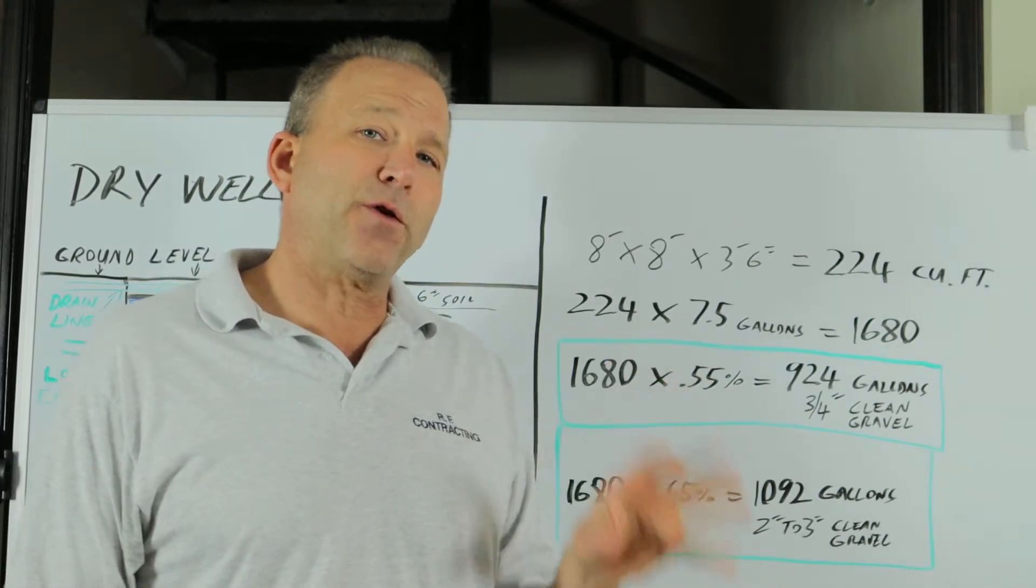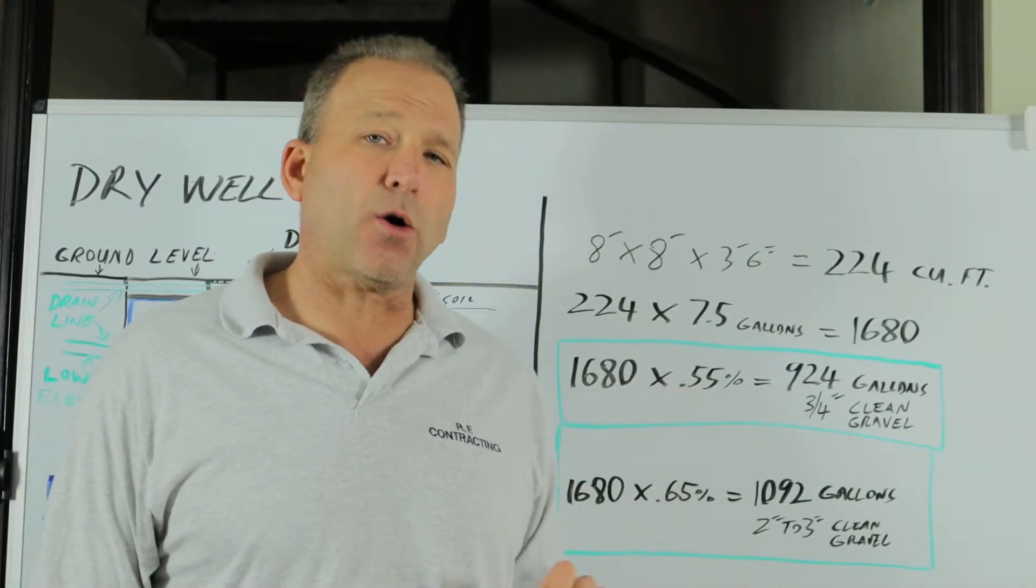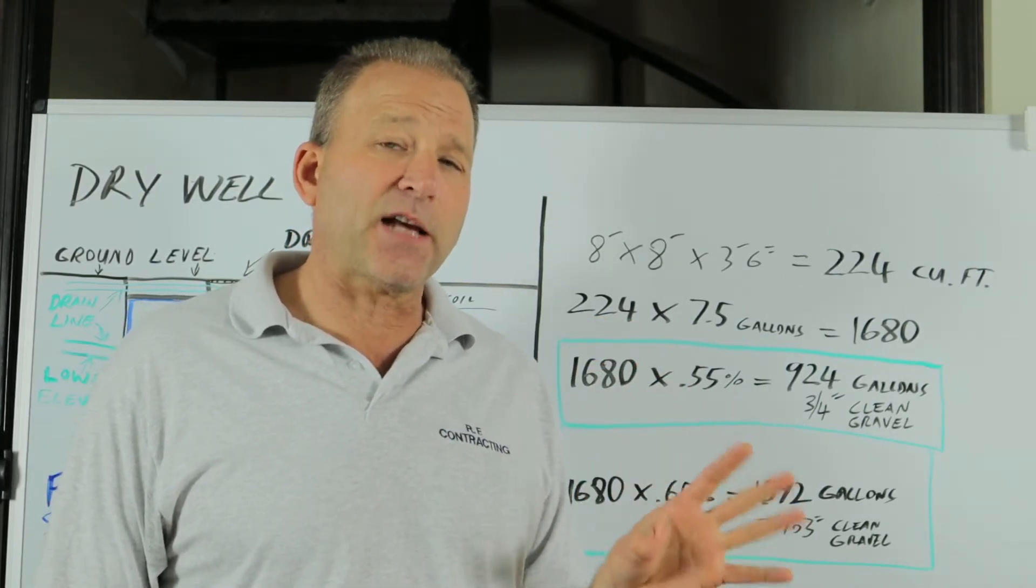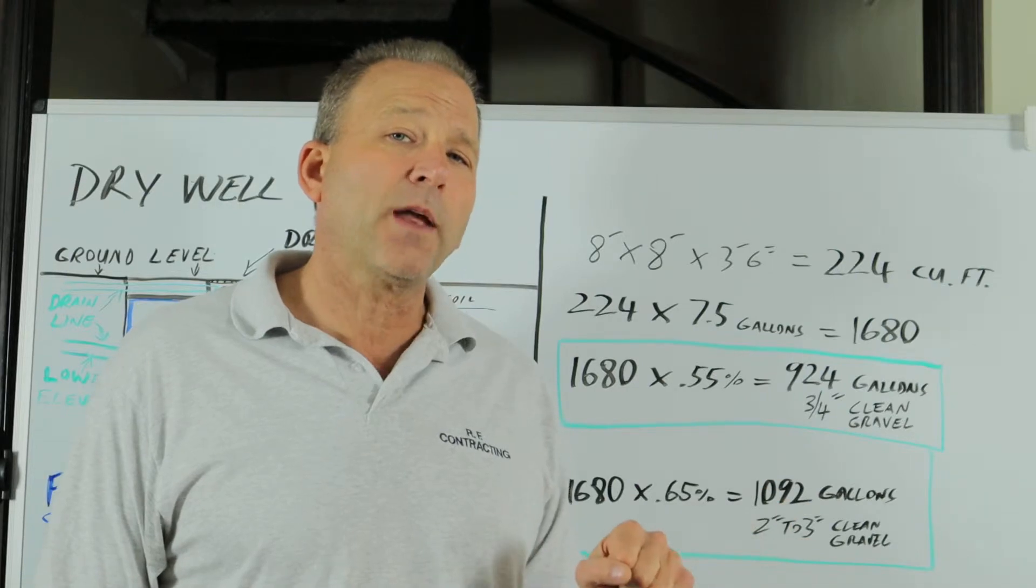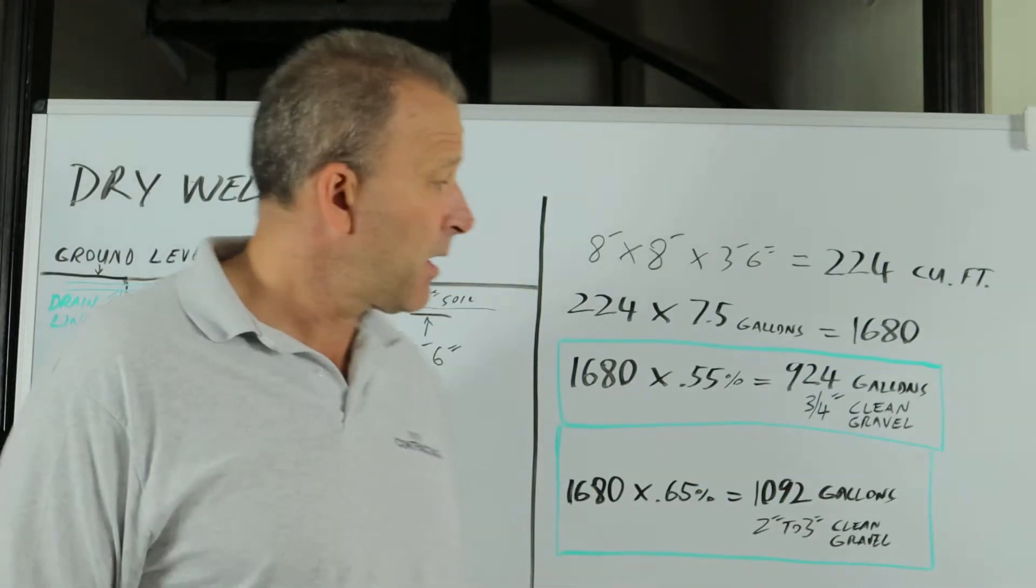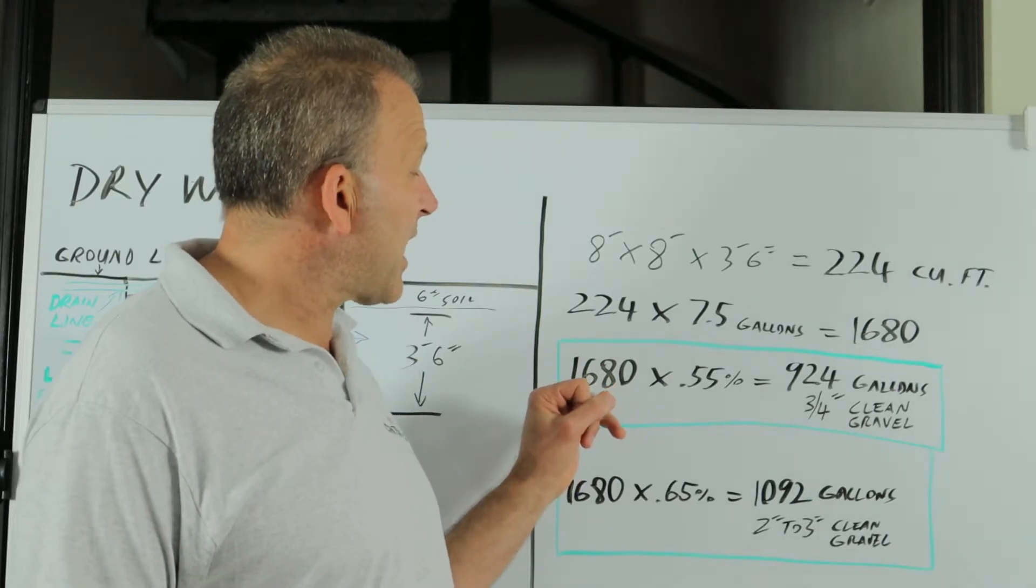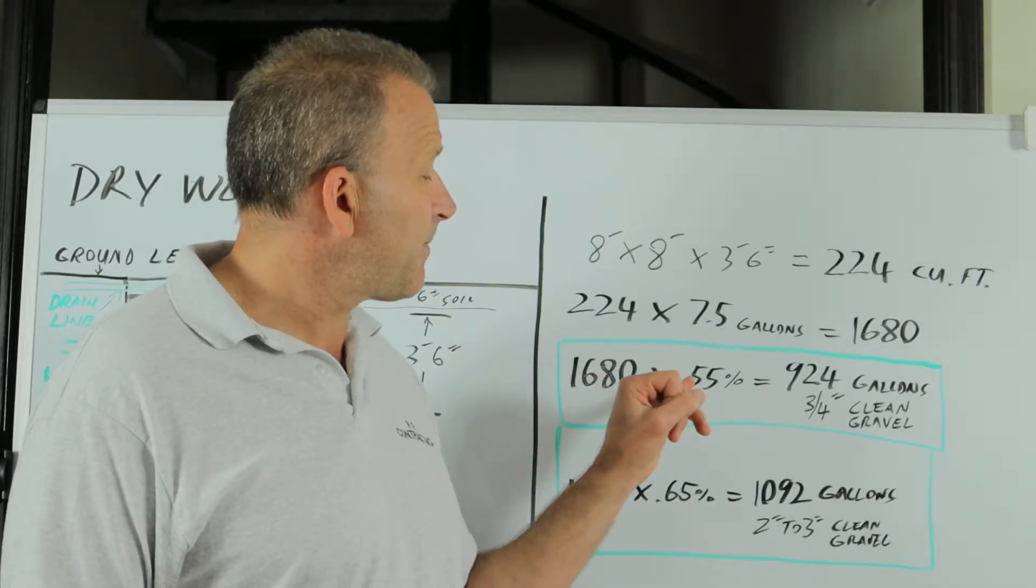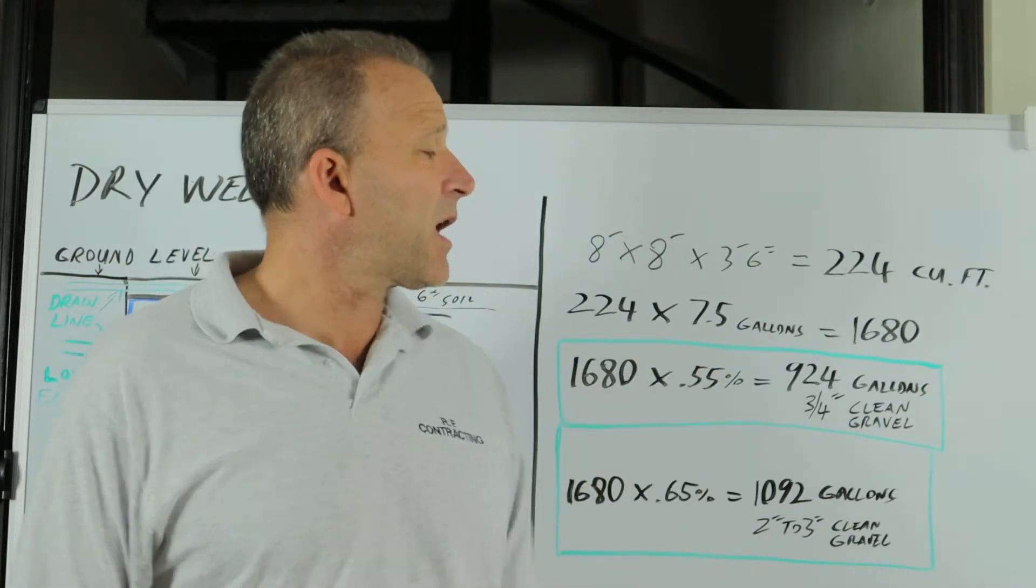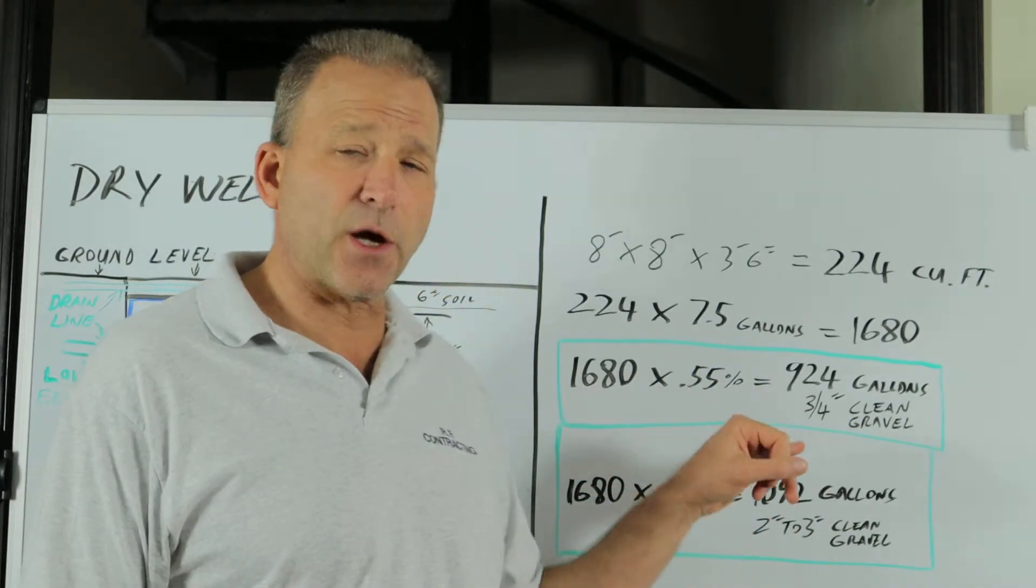Now we're going to fill that up with three-quarter inch clean stone. The three-quarter inch clean stone will take up 45% of the volume of the hole and leave 55% of the volume for water capacity. So your 1680 gallons times 55% equals 924 gallon capacity using the three-quarter inch stone.